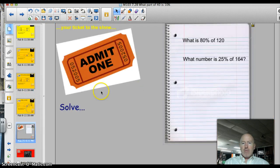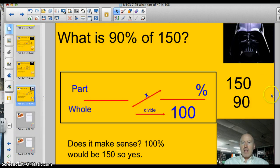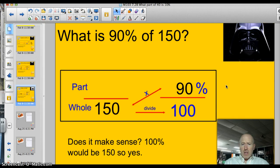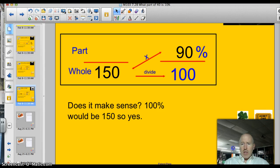Alright, last problem. Go ahead and give it a shot while we listen to Darth one more time. Don't underestimate the power of the box, Luke. Alright, let's pop the numbers in, see how you did. What is 90% of 150? So we know the whole is 150, and we got 90% of that. It's going to be close to 150, isn't it? If you multiply those in, you will get 135.